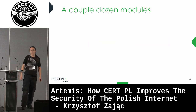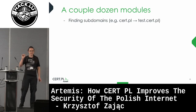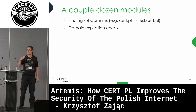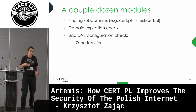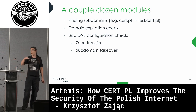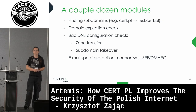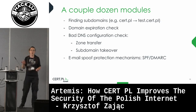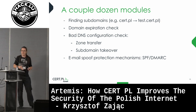The system we built has a couple dozen modules. First, it takes a domain and enumerates subdomains. Then it checks whether the domain is close to its expiry date. Then it checks the DNS configuration — whether it's possible to perform a zone transfer, or maybe a subdomain is registered on a hosting provider whose account expired and can be registered by an attacker. We also check email spoofing protection mechanisms, because in our constituency we have a big problem with spoofing — people trying to influence elections by sending spoofed emails. So we check whether those protection mechanisms are set up correctly.